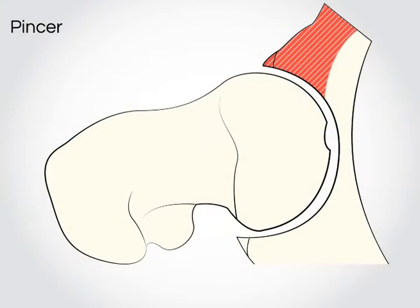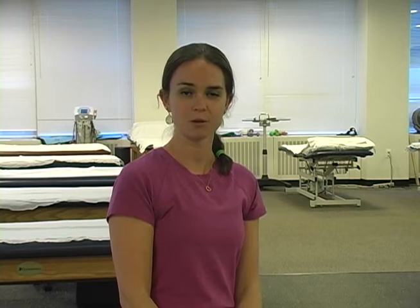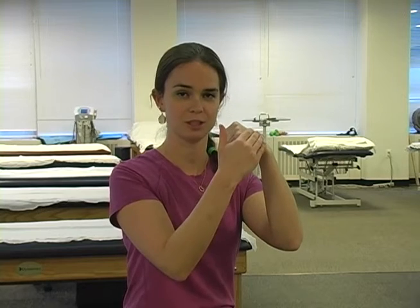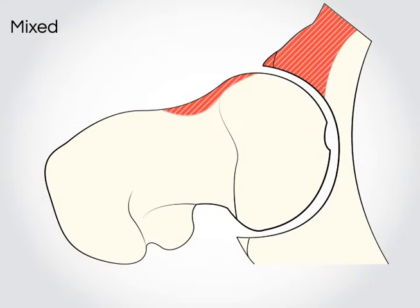The next type of lesion is a pincer lesion. This is when on the acetabulum there's too much bone that sticks out, so when the head of the femur rubs up against the bone it peels off the labrum causing a tear. The last type is a mixed type — not only is there a pincer lesion on the acetabulum, there's also a CAM lesion on the femoral neck, so they bump up against each other causing the peeling back and the tearing of the labrum.